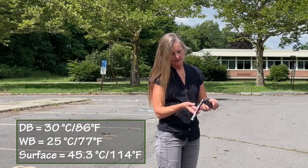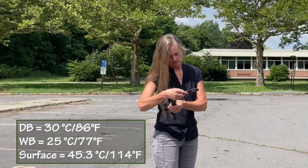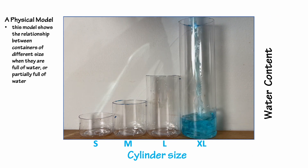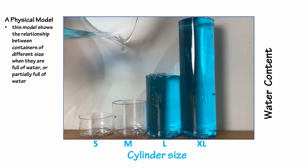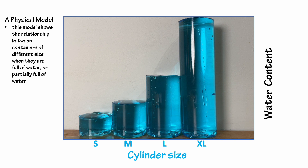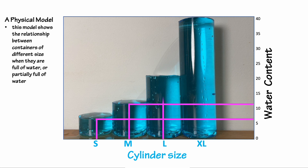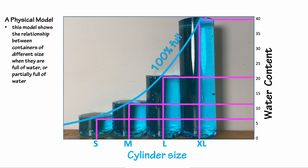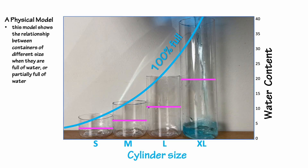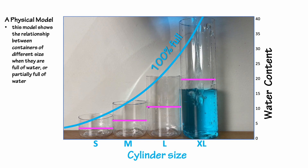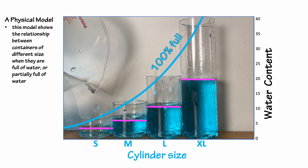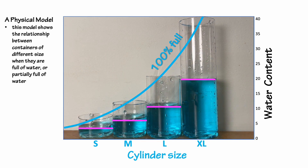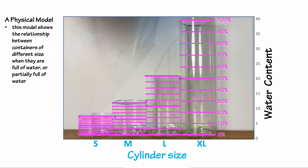Everything we've measured so far is invisible, so let's begin by constructing a physical model that we can see and then relate that to temperature and humidity. Here are four little containers of different size, and we're going to fill them up with colored water. The largest container has the most water and the smallest one has the least, but each one is holding the maximum amount of water for that container — it's 100% full. We can show that with a curve that relates cylinder size and water content. Now let's fill the containers half full, or 50% of their capacity, and draw a curve showing where 50% is. And in fact, we could do this for any water level.